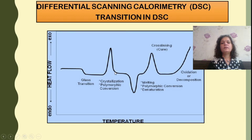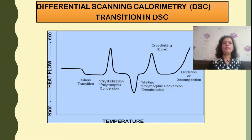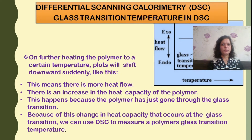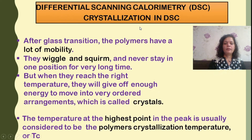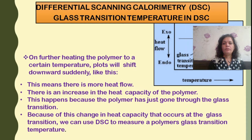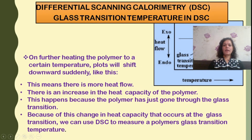This is a complete DSC curve obtained for a particular polymer showing different types of transitions. The first transition is the glass transition temperature. When the polymer sample is started to be heated, there is a slight downward shift in heat flow, meaning there is more heat flow and an increase in heat capacity of the polymer. This happens when the polymer has just gone through the glass transition.